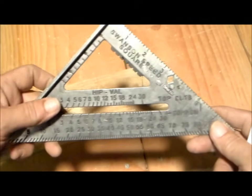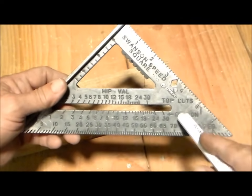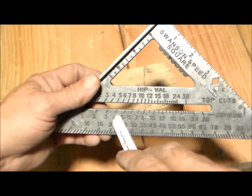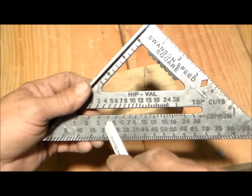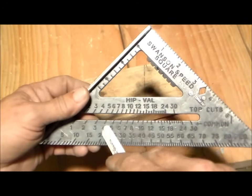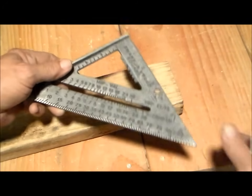We have this regular speed square. We're going to be using the common setting. Come down here to the number four on common. That four is a 4/12 pitch. Now the speed square will also tell you what the degrees are.